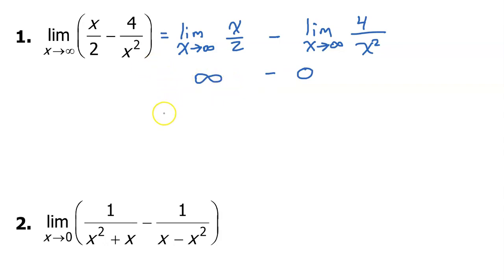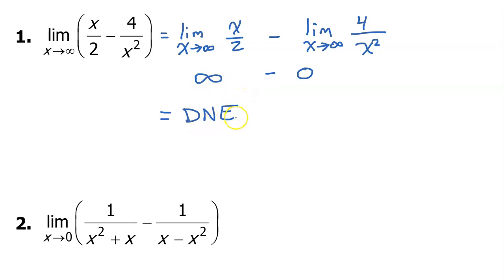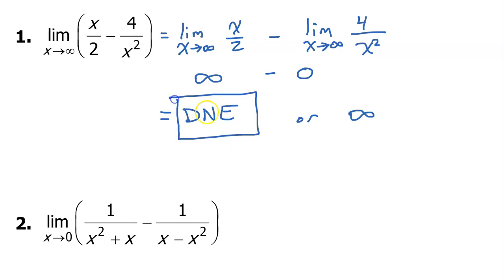In terms of finding a limit, we're either going to say that the limit does not exist, because if the value is just getting bigger and bigger, then it's unlimited. I think it is also acceptable to say the limit is infinity, but I tend to stick with 'does not exist.'